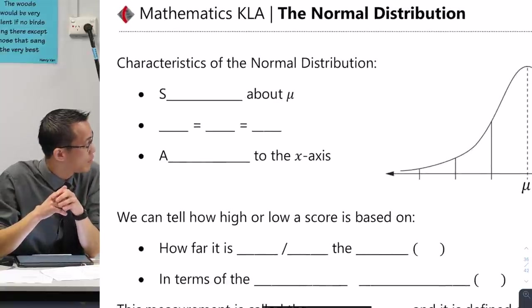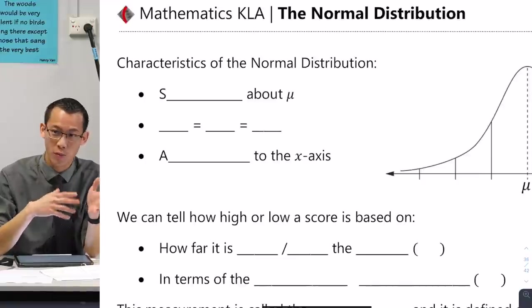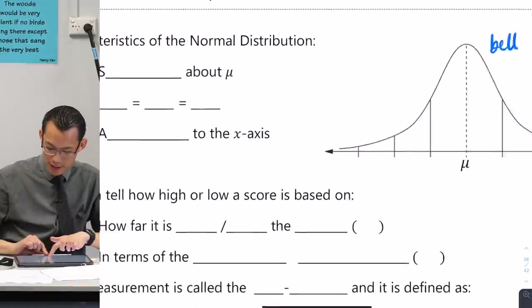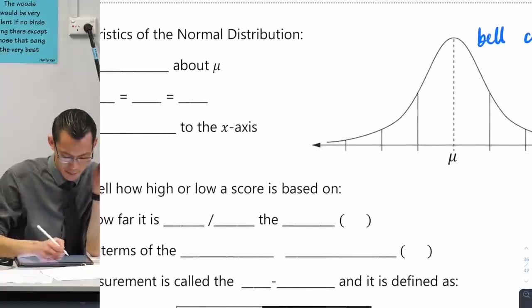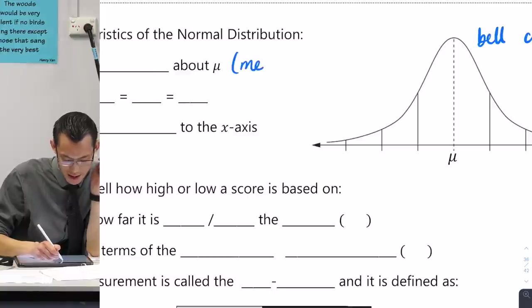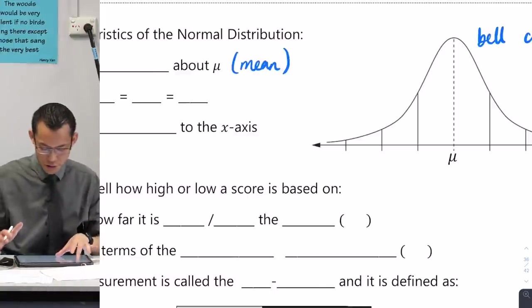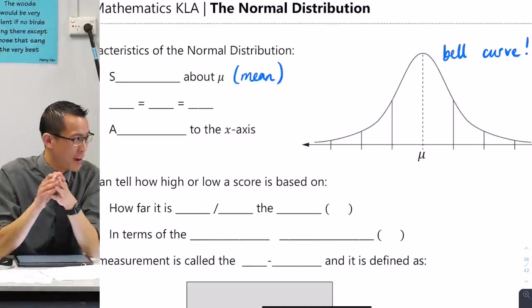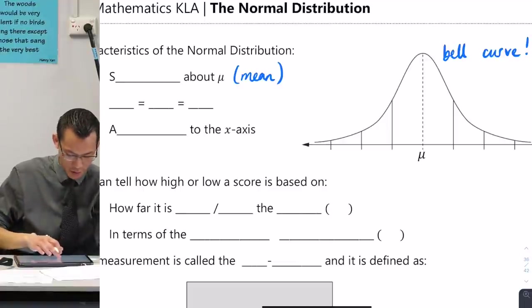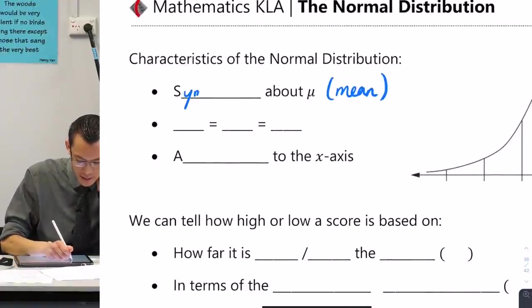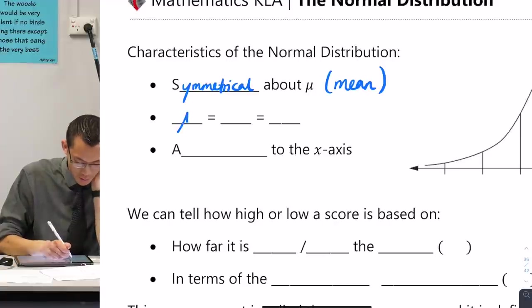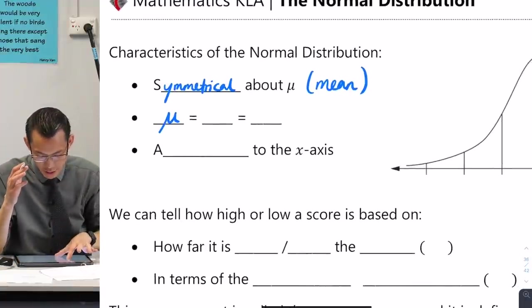So what I want you to do with me is to note some of the characteristics about this, and then we're going to dig into what you can do with it once you understand it. So the first thing is you can see that mu there. What does mu stand for again? That's the mean. The first thing that you notice is that this distribution, I hope you can see, it's kind of the same on both sides. What word would we use to describe that? It's symmetrical. So the normal distribution is symmetrical about the mean, about mu.